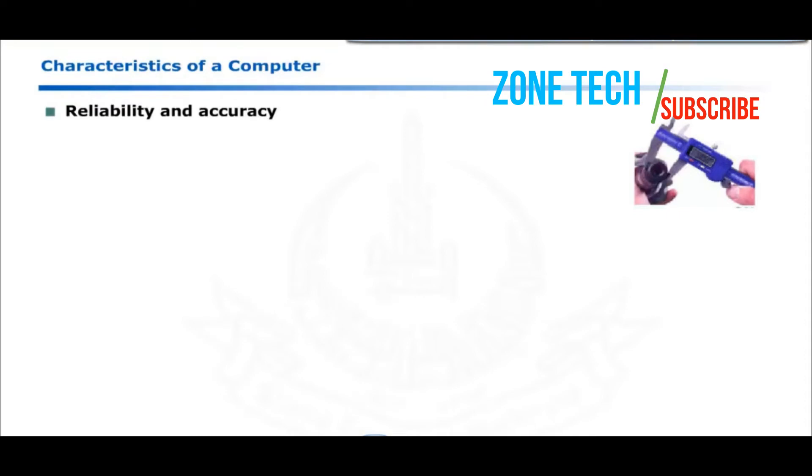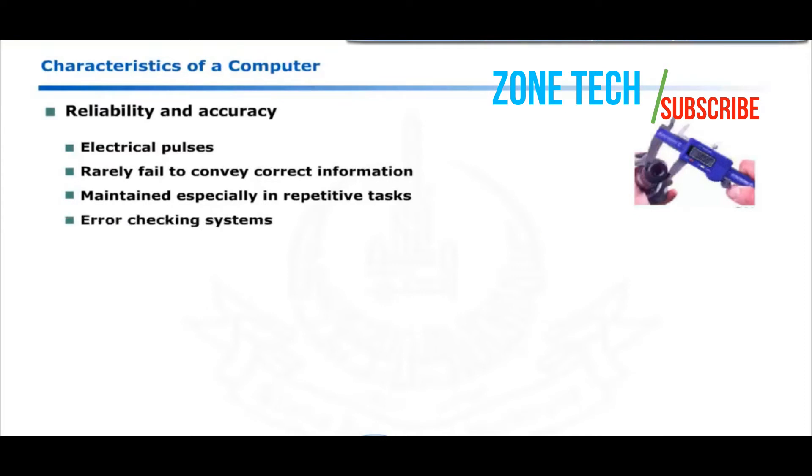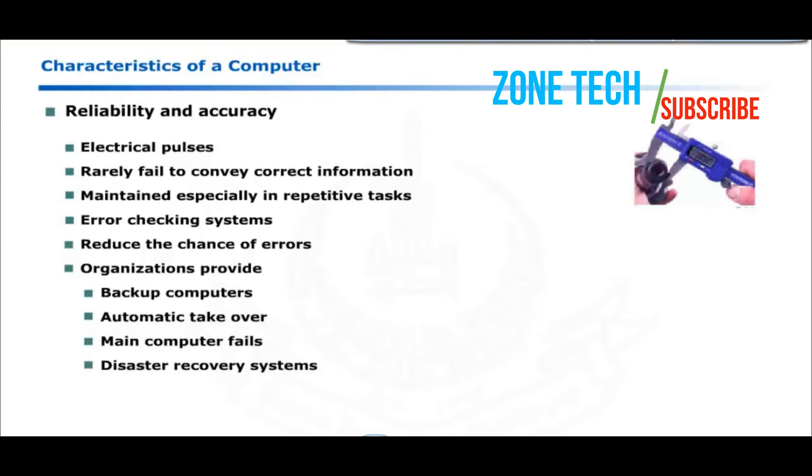High accuracy and reliability is because a computer works on electrical pulses that rarely fail to convey correct information. The reliability of computers is maintained especially in repetitive tasks. Further, the error checking systems are built in the computer to reduce the chance of errors. Organizations provide backup computers that automatically take over in case the main computer fails. Recovery systems are implemented to further strengthen the reliability of data.